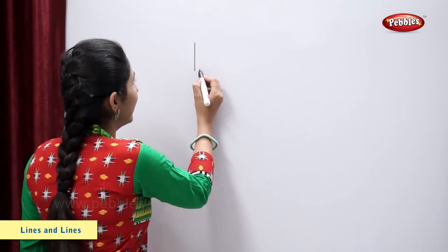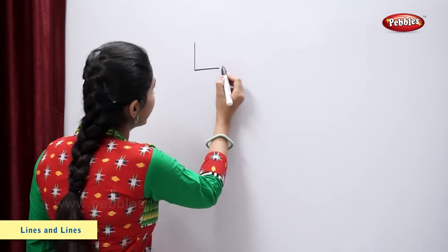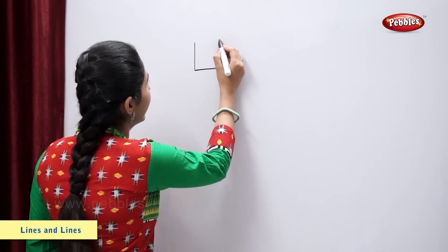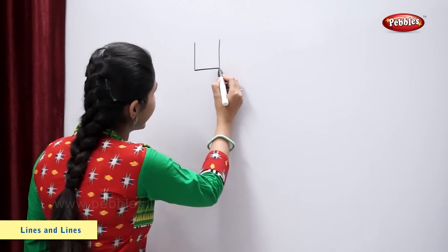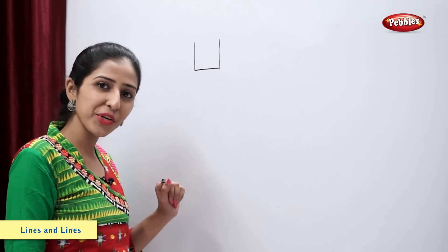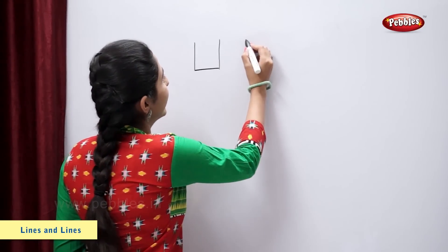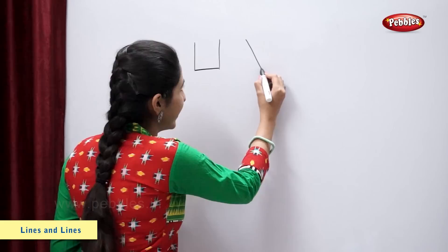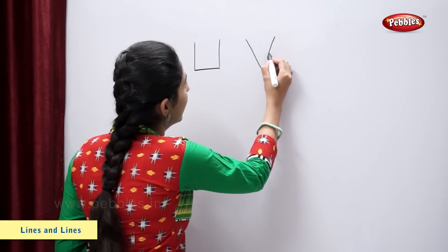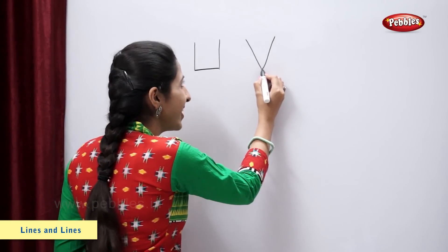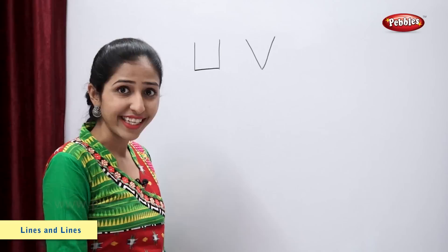Standing line, sleeping line. A standing line — letter U. Slanting line, one more slanting line — letter V.